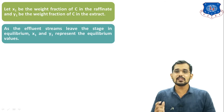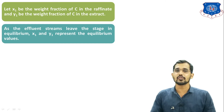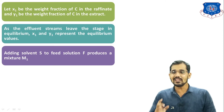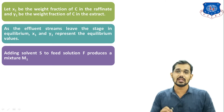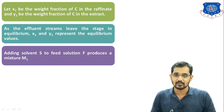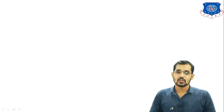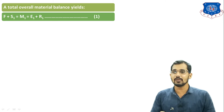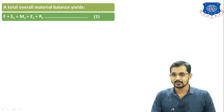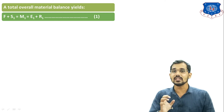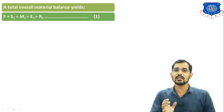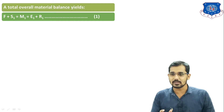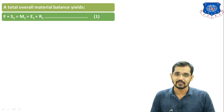As the effluent streams leave the stage in equilibrium, we get the equilibrium composition of the raffinate and extract phase. Adding extracting solvent S to feed solution F (= A + C) gives one mixture represented by M1. The total material balance yields: F + S1 = M1 = E1 + R1. F is the feed solution, S1 is the mass of the extracting solvent (component B), these are the inlet streams. Their mixture is M1, and after extraction we get two outlet streams: E1 (extract phase) and R1 (raffinate phase).